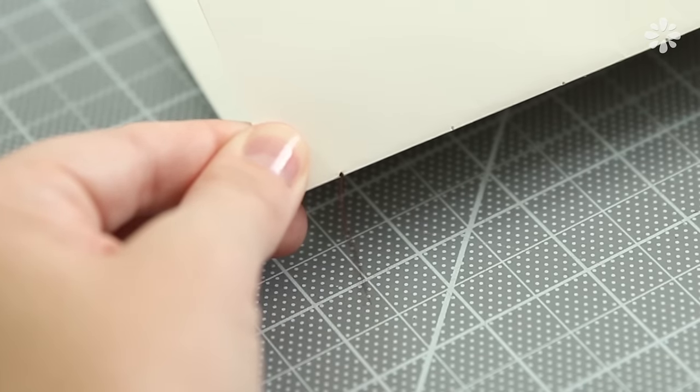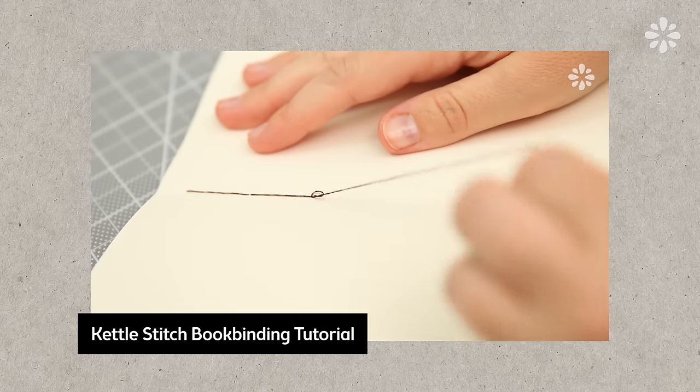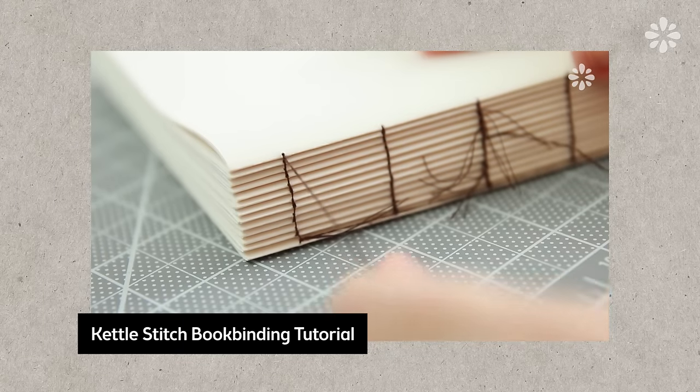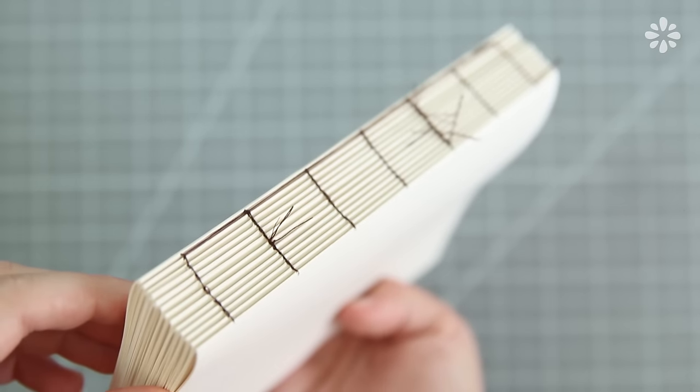I'll be using a kettle stitch binding method to make this text block. If you're not familiar with this binding, go check out my kettle stitch book binding tutorial. It's an in-depth focus on just the binding itself and it goes at a slower and steady pace so that you can easily learn how to do it. Now that I have all the signatures stitched together, it's time to glue the spine.